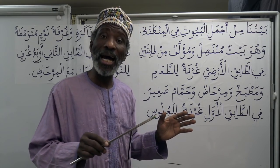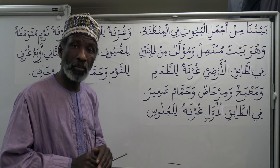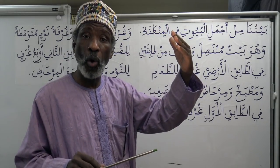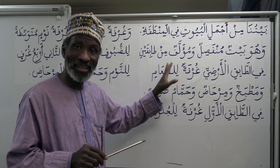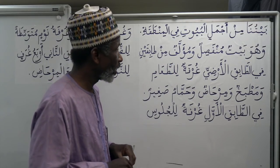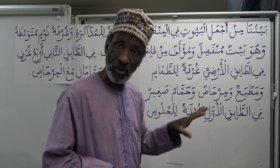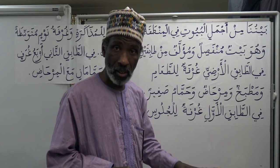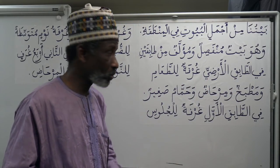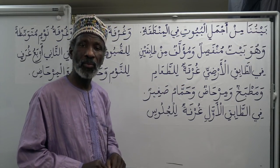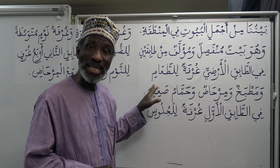Wa huwa beytun munfasilun — it is a detached house. Wa mu'alafun min tabaqayn — it is comprised of two floors. Tabaqayn is in the genitive because of min. Fi al-tabaq al-ardhi — on the ground floor; ard meaning floor, or earth as well.